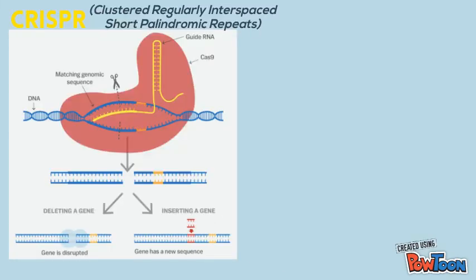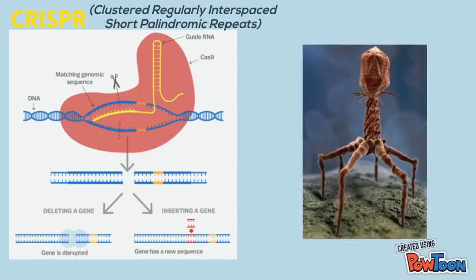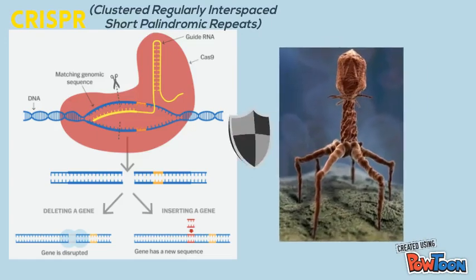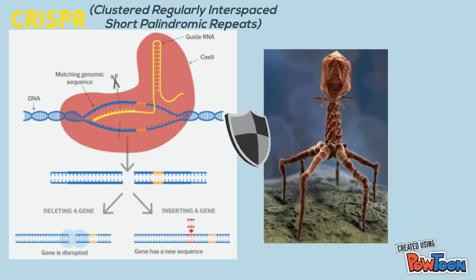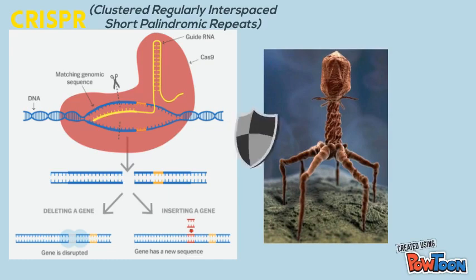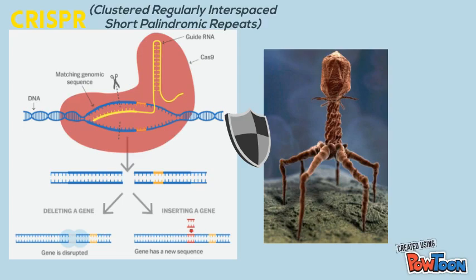An interesting fact about this bacteria is that it has CRISPR-mediated phage resistance. A bacteriophage is a virus that infects and replicates within a bacteria. CRISPR, in simple words, is the ability to edit the genome. It is for this reason that S. thermophilis is widely studied.